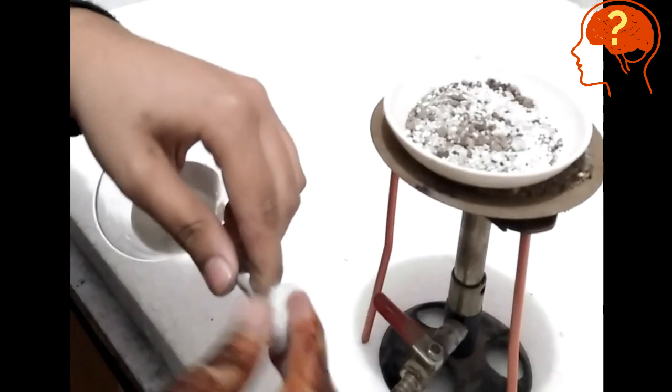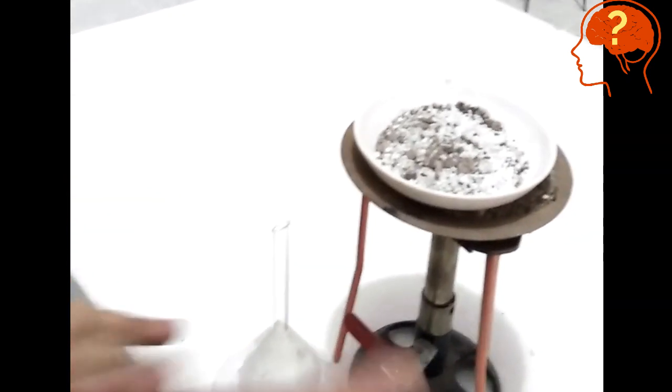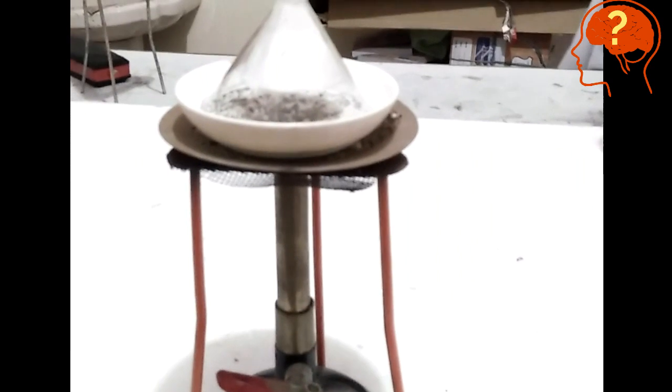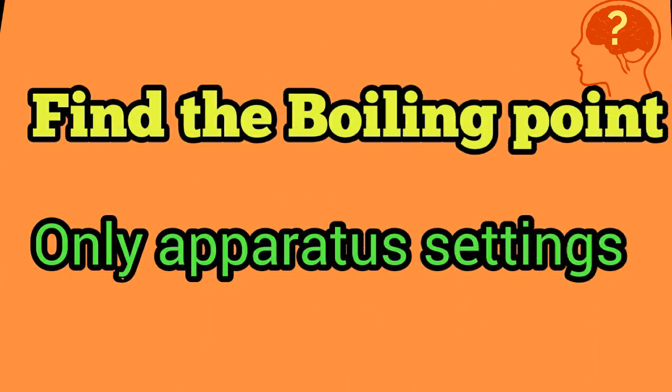Take the funnel and close its open end with the cotton. Place the inverted funnel on the top and place it in the apparatus for gentle heating for few minutes.